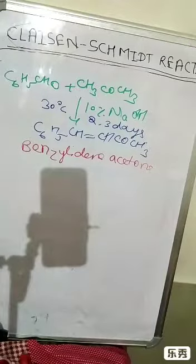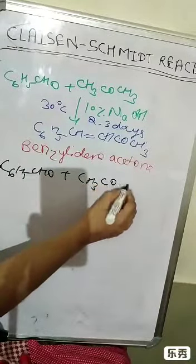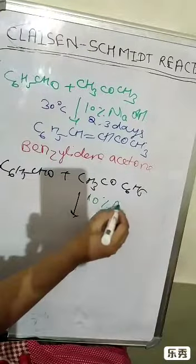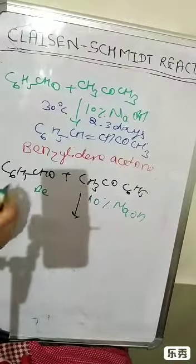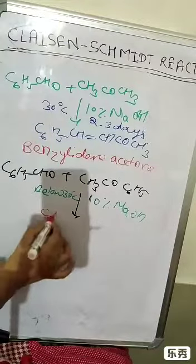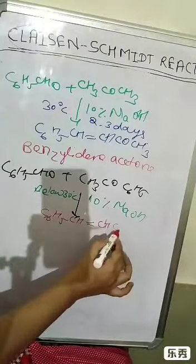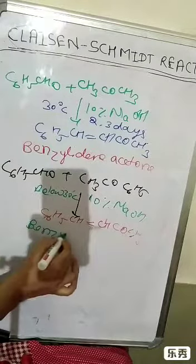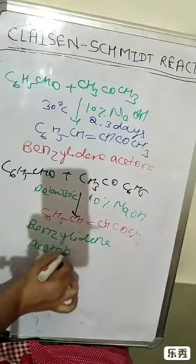Another reaction: C6H5CHO reacts with C6H5COCH3 in the presence of 10% NaOH below 30 degrees Celsius. We get C6H5CH=CHCOC6H5. The name of this compound is benzalacetophenone.